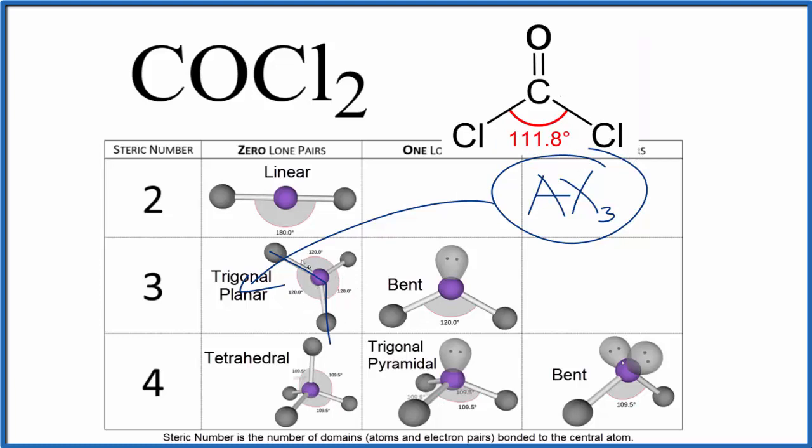but not the 120 degree ideal we talk about on the table. This is Dr. B with the molecular geometry, bond angles, and electron geometry for COCl2. Thanks for watching.